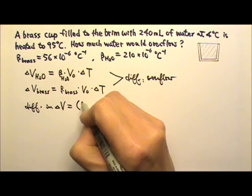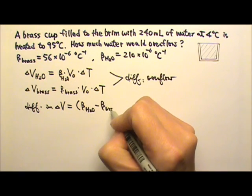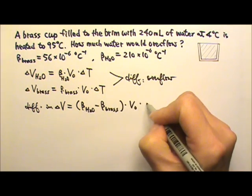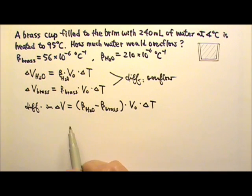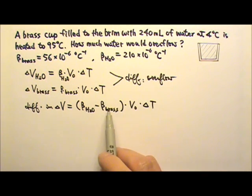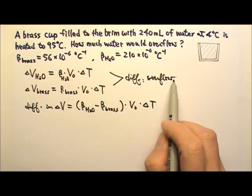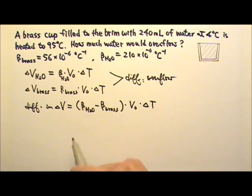So this gives us the beta for H₂O minus the beta for brass times the V₀ times the delta T, which means no water would overflow if the two have the same beta. The reason why we get water overflowing is because the two betas are different.